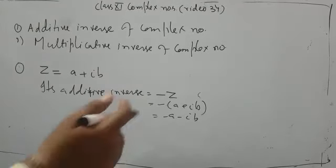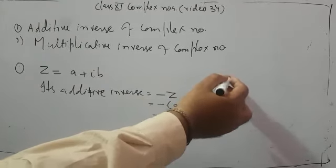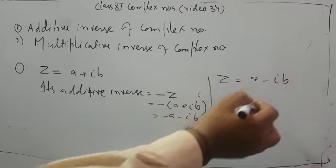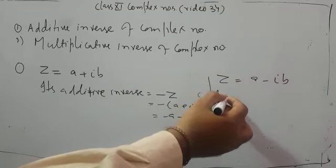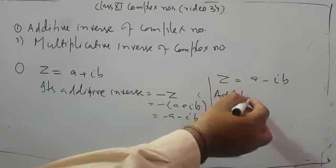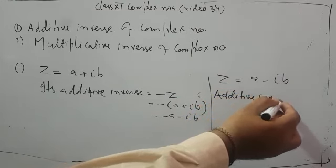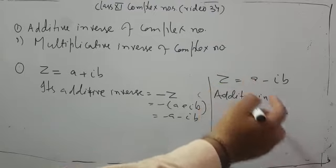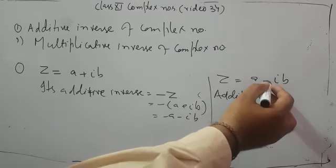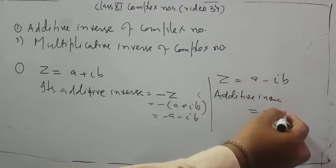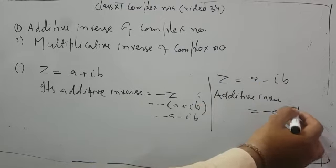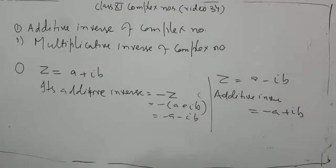Let me give one more example. Suppose z = a − ib. Its additive inverse: change the signs — plus a becomes minus a, and minus ib becomes plus ib. So the additive inverse is −a + ib. The opposite of addition is subtraction and vice versa. This is the additive inverse. We will see the multiplicative inverse in the next video.